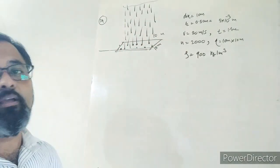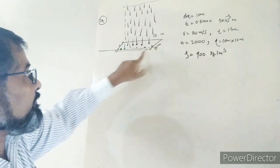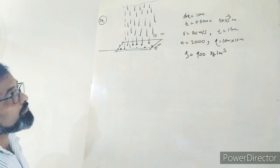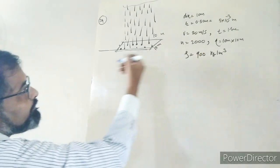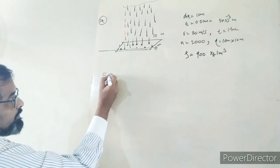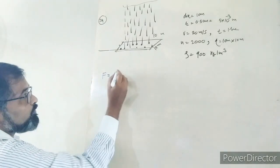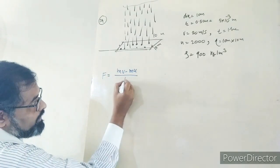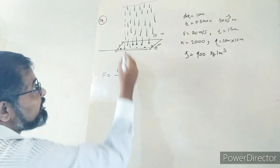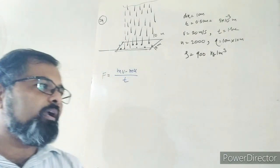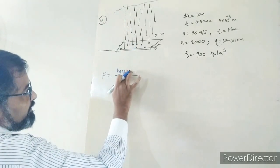This is the data given — hailstones falling perpendicular. The area is 10 m × 10 m. We need to find the volume, velocity, and number of hailstones. We are asked to find how much force acts. This force, by Newton's second law, is the rate of change of momentum — change in initial momentum.